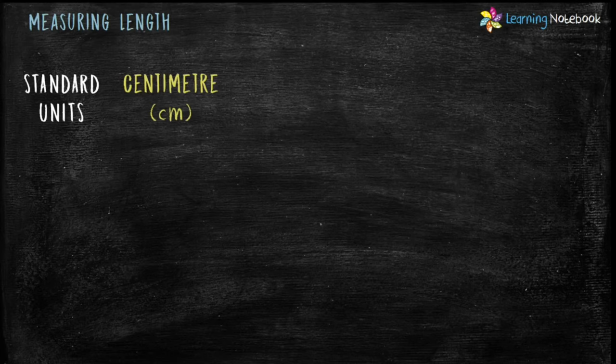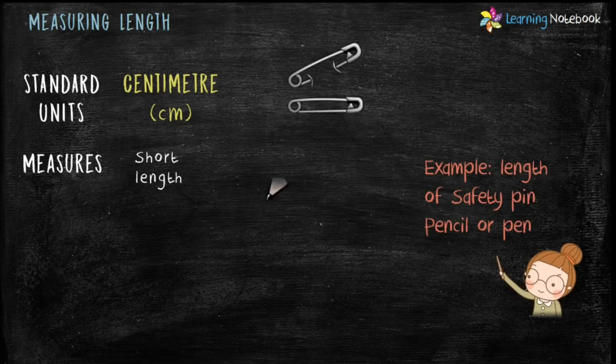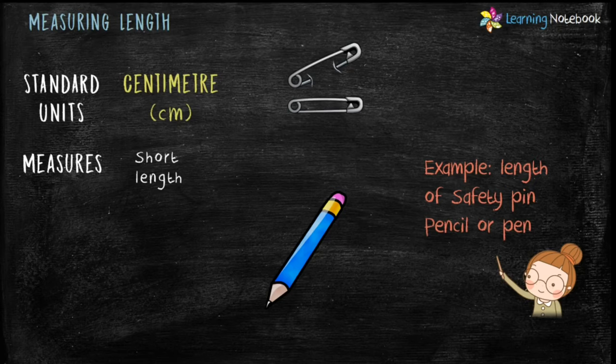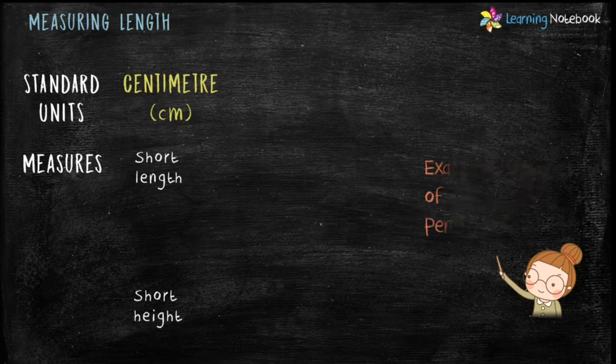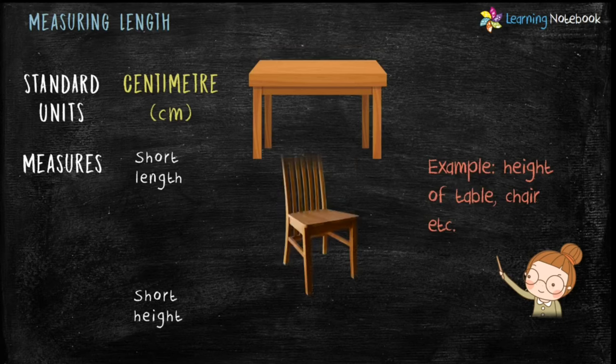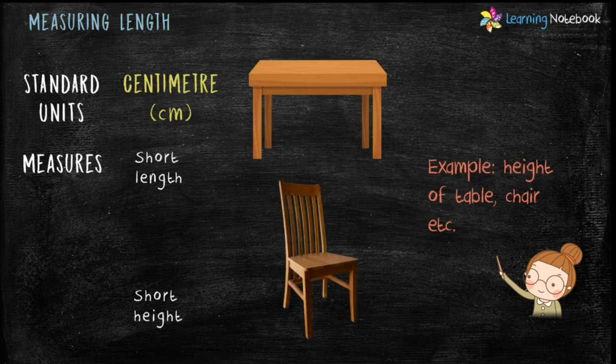First let's discuss centimeter. In short, centimeter is written as cm. We use centimeter to measure short length — for example, length of a safety pin, length of a pencil, or length of a pen. They are measured in centimeters. We also use cm to measure short height — for example, height of a table or height of a chair are measured in centimeters.